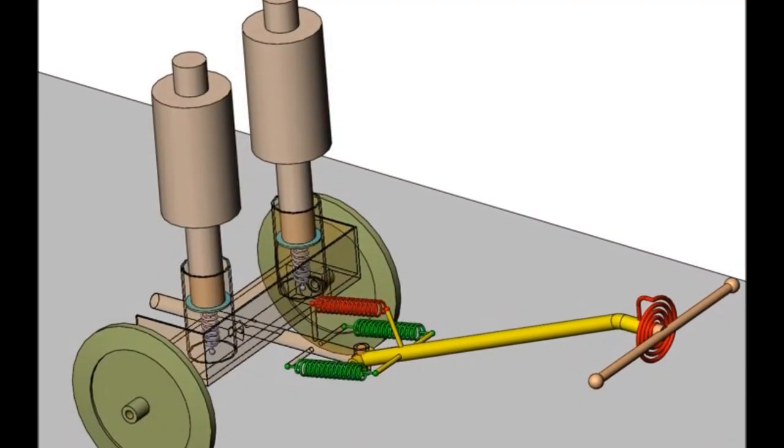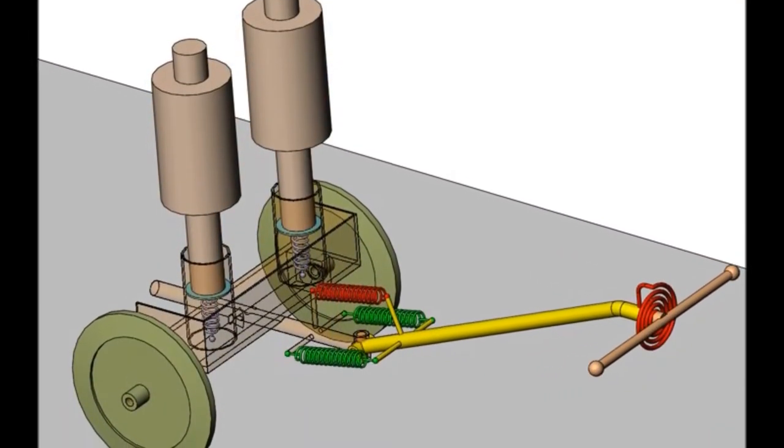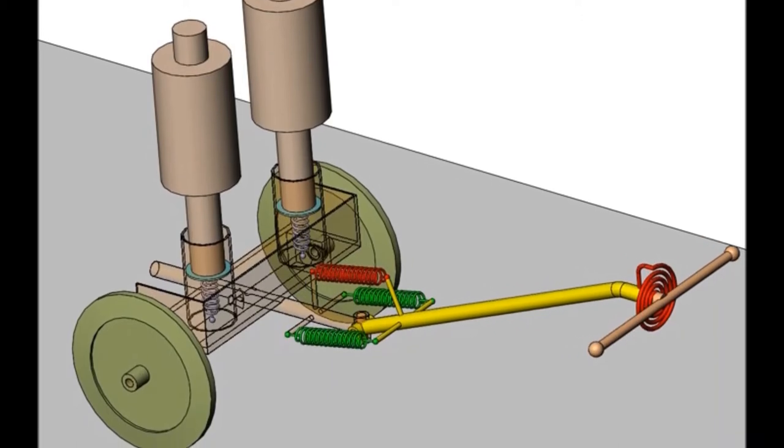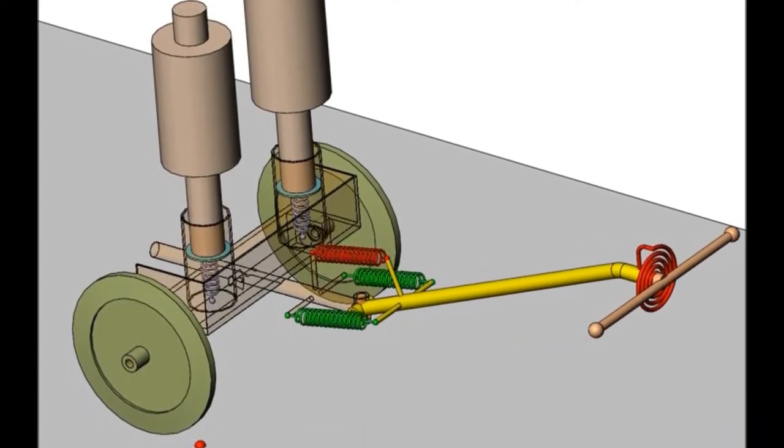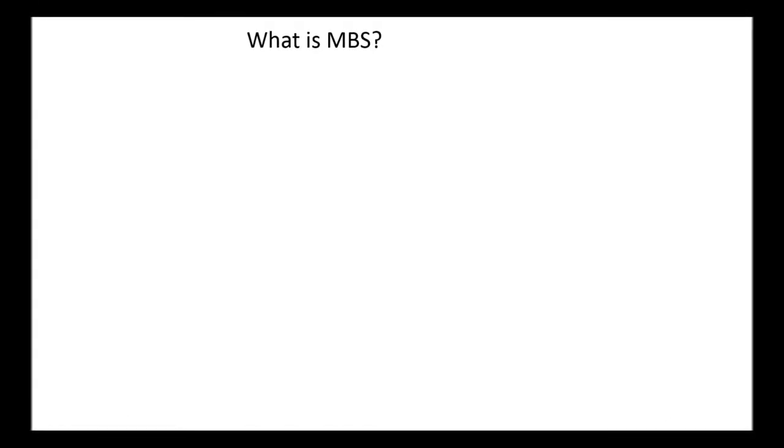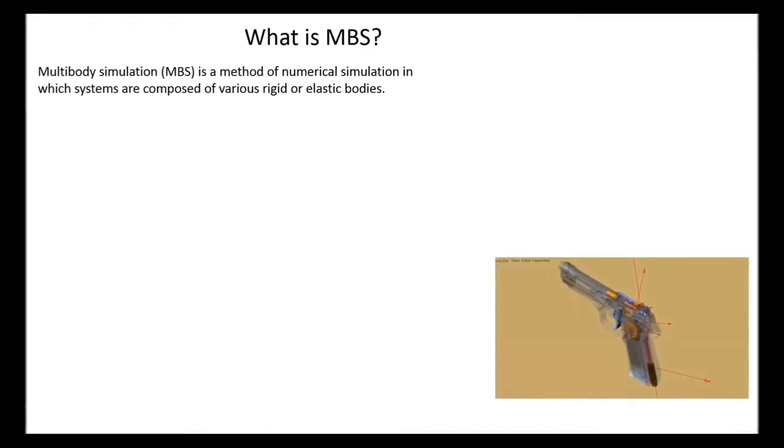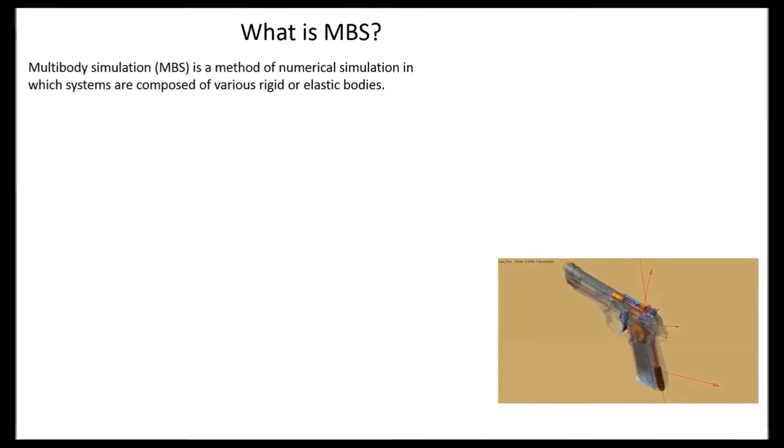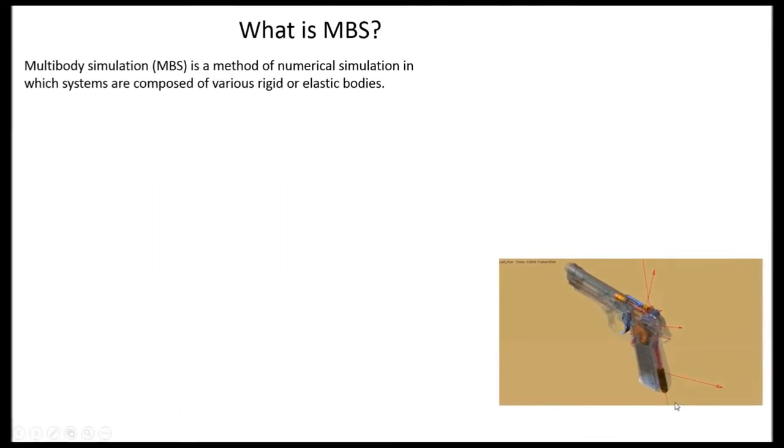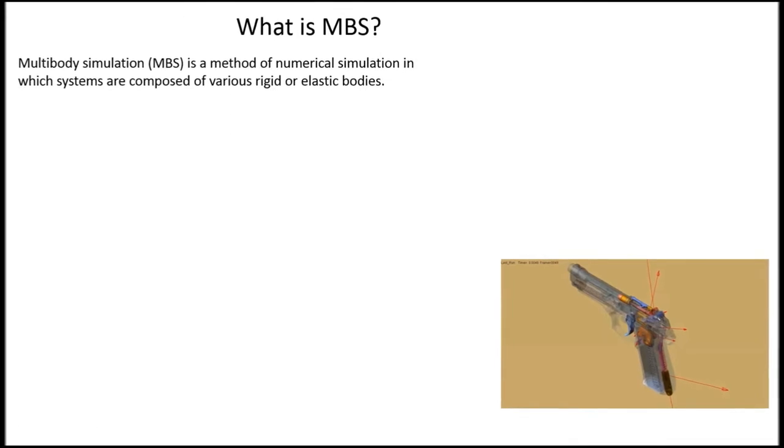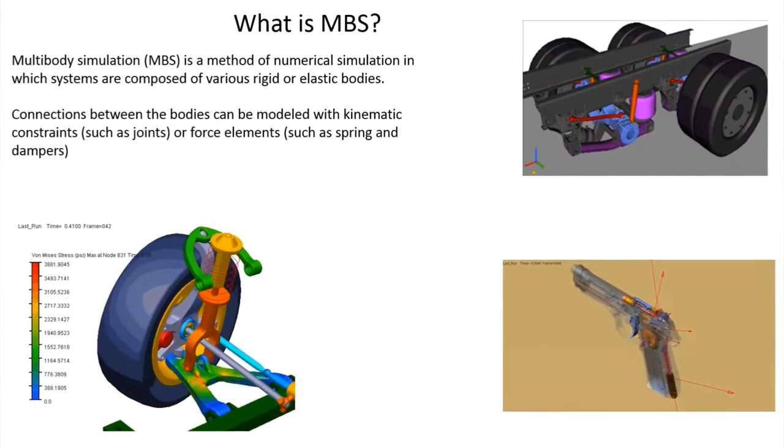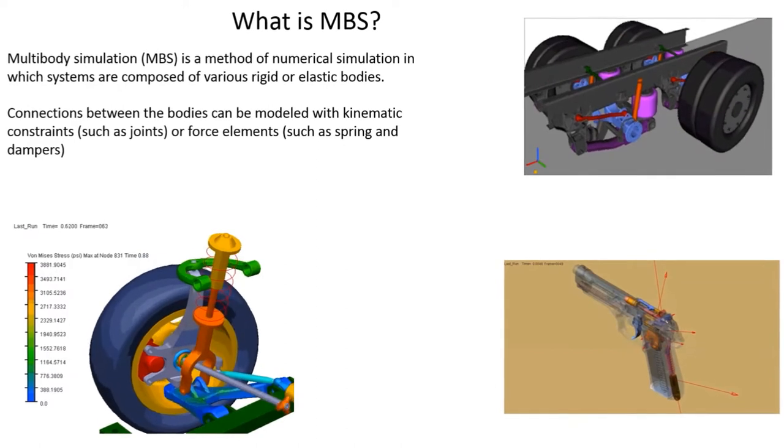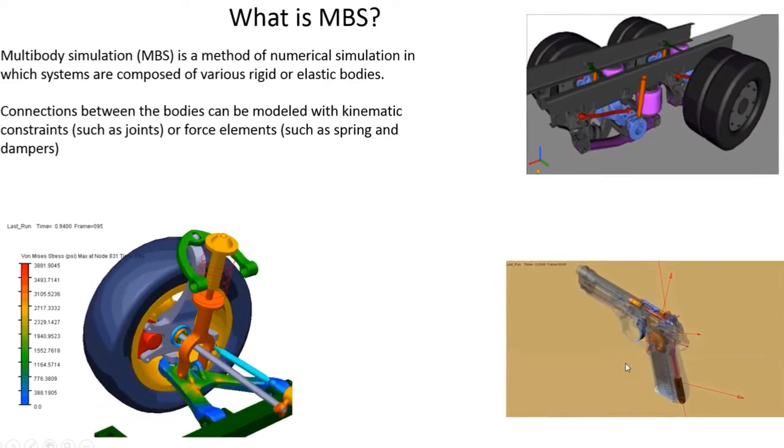Thus, we built a multibody model, which allowed rapidly evaluating the effect of the damping coefficient associated to the cockpit floor. Multibody simulation MBS is a method of numerical simulation in which systems are composed of various rigid or elastic bodies. Connection between bodies can be modeled with kinematic constraints such as joints or force elements such as spring dampers. MBS is a useful tool for conducting motion analysis.